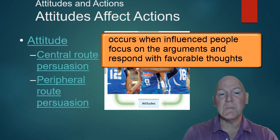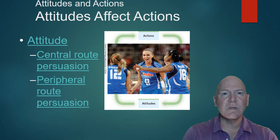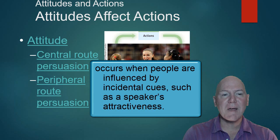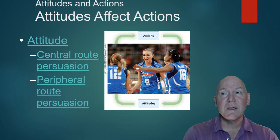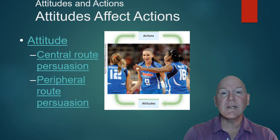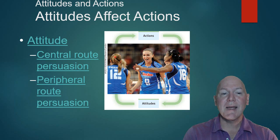When we try to persuade people, the central route of persuasion is when we use logic and facts and the person responds to those informational items. However, the peripheral route is when we use things outside of logic — like attractiveness or famous people in advertisements — to influence decisions.